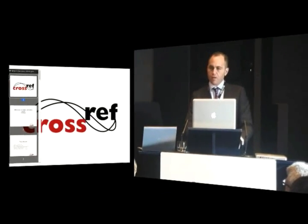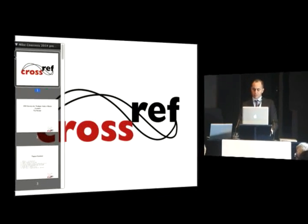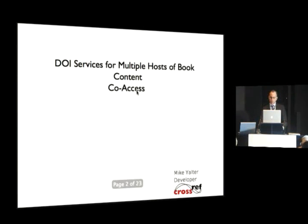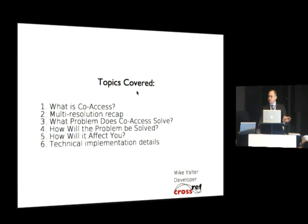I'm Mike Jolter. I've been working on actually developing the co-access of books, and I'm going to go over how we're planning on creating that right now. First, I'm going to go over the lay of the land, so to speak, as it stands and what we're trying to accomplish — a little bit of repetitive information from what Patricia just went over, but with more emphasis on the details, the concern, and co-access.